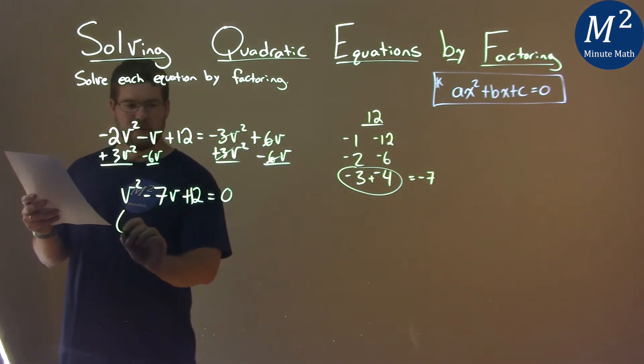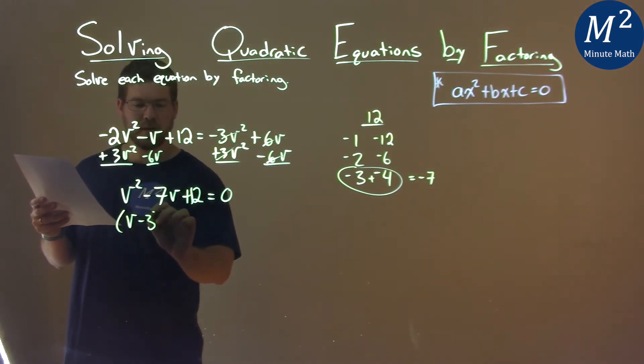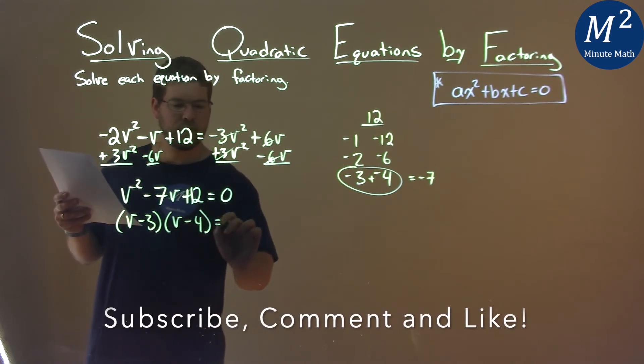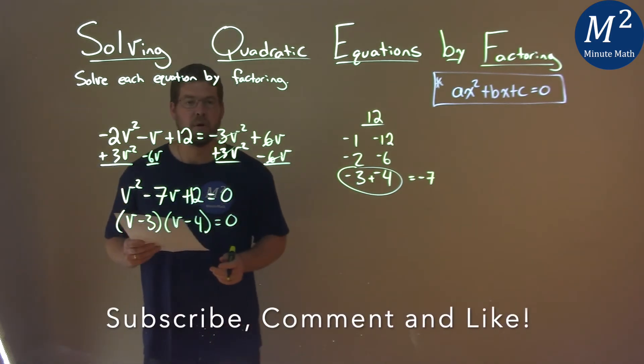We then write v - 3 here, and v - 4 = 0, and now we've factored that quadratic.